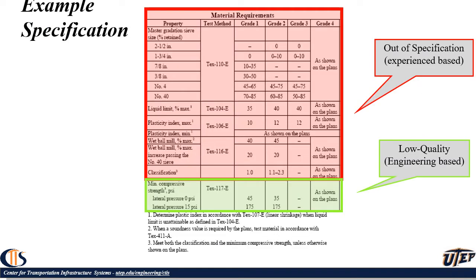Let me first define the difference between an out-of-spec material versus a low-quality material. I'm showing you an example of a specification extracted from the Texas Department of Transportation. There are two components: one, the limits for some index properties given the gradation and plasticity; and the second part has to do with engineering testing, like the strength test. What I refer to as out-of-specification are these index test results, where limits are set based on consensus and experience, as opposed to the engineering values shown in green.